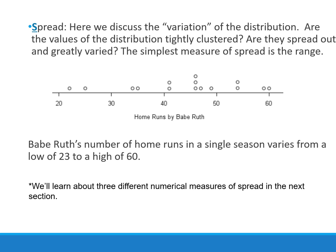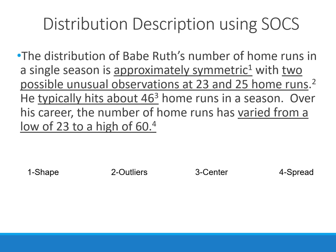Range is actually a single number — so the range would be described as 37. All four of these things are wrapped up into a single paragraph; we don't just list them. That's not how it's expected on the AP exam. They want us to write it out including context. For example: 'The distribution of Babe Ruth's number of home runs in a single season is approximately symmetric with two possible unusual observations at 23 and 25 home runs. He typically hits about 46 home runs in a season. Over his career, the number of home runs varied from a low of 23 to a high of 60.' That covers shape, outliers, center, and spread.